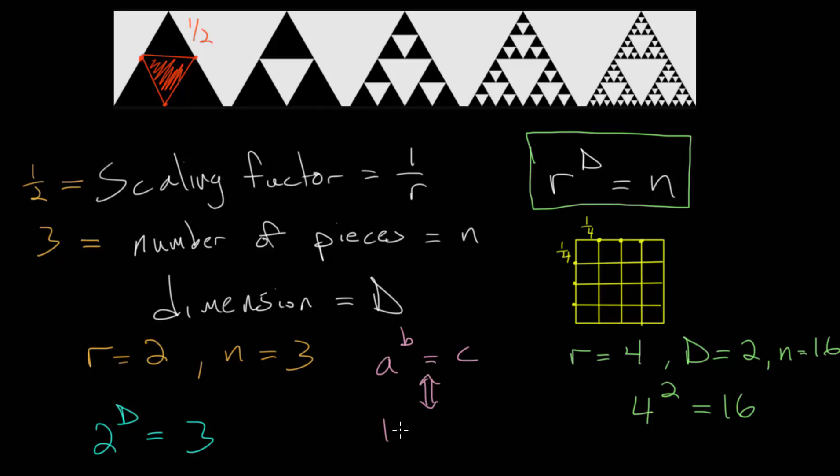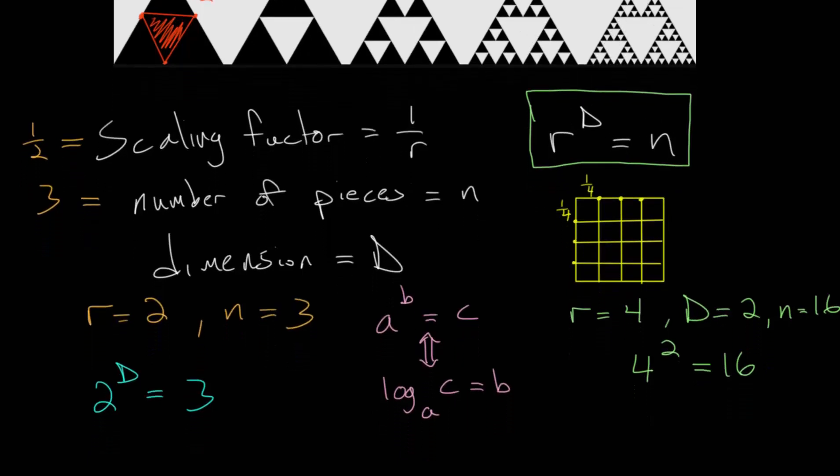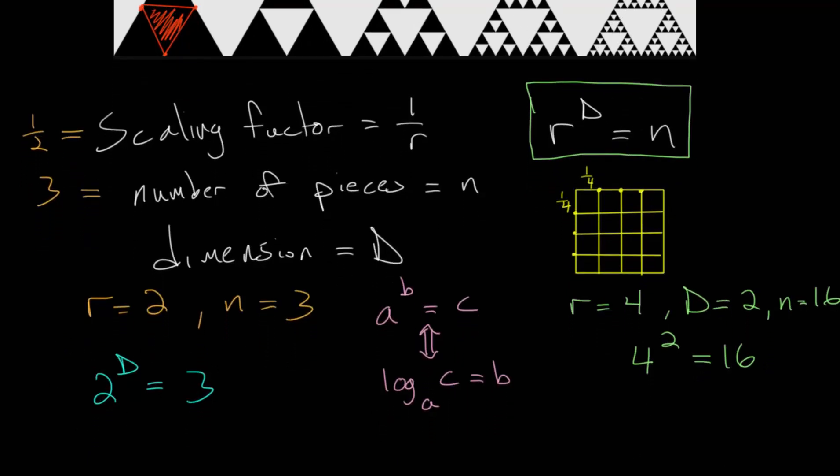The base of the logarithm is the same as the exponential equation. We'd have log base a, and logarithms are equal to exponents. So the logarithm would be equal to b, and c would be the input of the logarithm. Whatever the exponential equation is equal to is the input of the logarithm. From here,